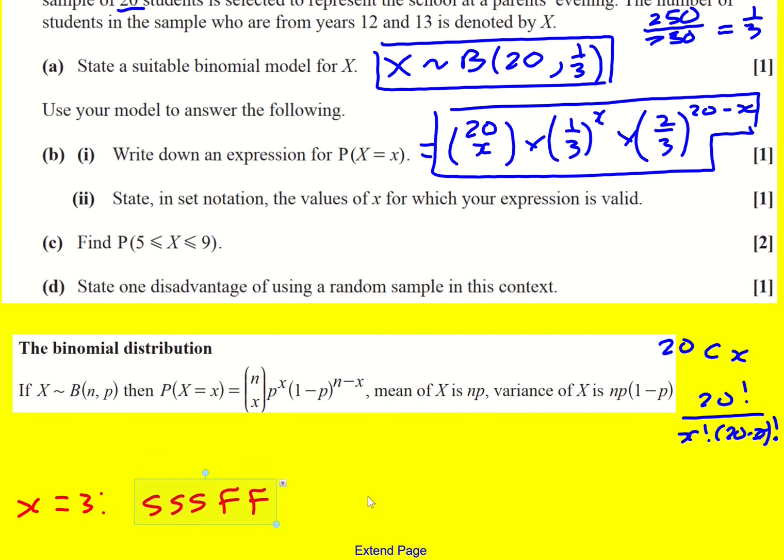Now if I get it in exactly that order I would times the probability of success together three times. That's where a third to the power of three comes from which is similar to where a third to the power of x comes from. And basically if you're happy with your tree diagram, I'm basically going success success success along my tree diagram and then I'd be going failure and failure to finish, and that then would be two thirds squared which is where this has come from because it's the remaining amount of failures, 20 minus whatever x is.